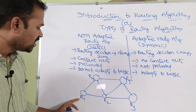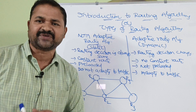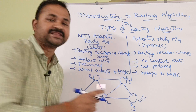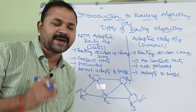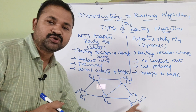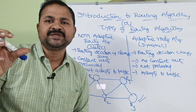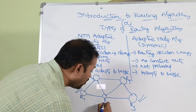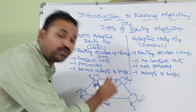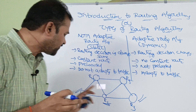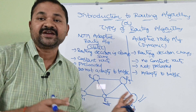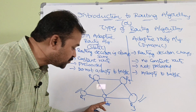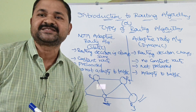Let us say we have a graph with five routers: R1, R2, R3, R4, and R5. Our aim is to transmit a packet from source router R1 to destination router R3. Assume the network administrator has configured the routing table to use R2 only — so R1 transmits the packet to R2, and in turn R2 transmits the packet to R3.